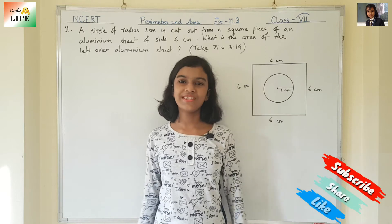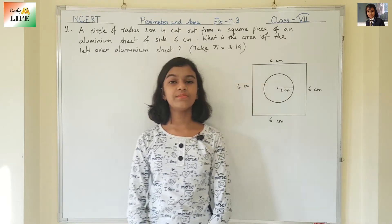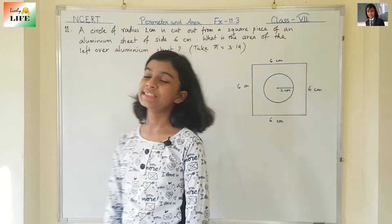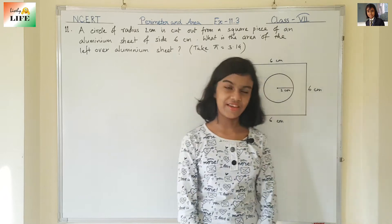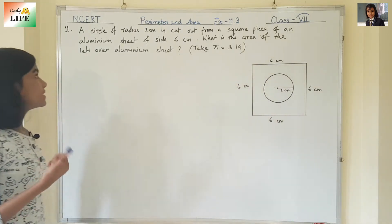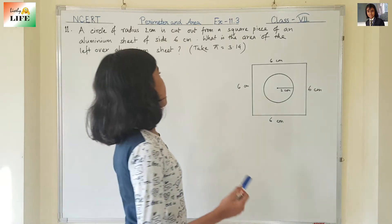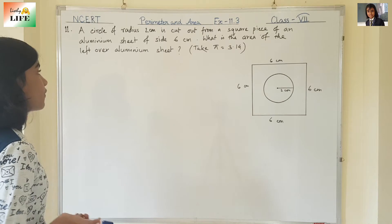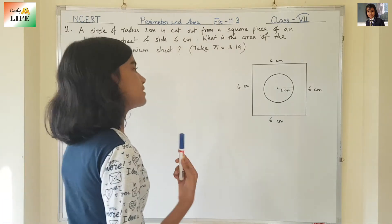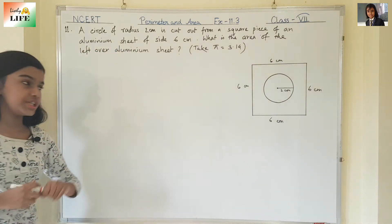Hello everyone, I am Adrita. Welcome back to my study room. In the previous video we have already completed question number 10 of exercise 11.3. Now we are going to start with question number 11. A circle of radius 2 cm is cut out from a square piece of an aluminium sheet of side 6 cm. What is the area of the left over aluminium sheet?